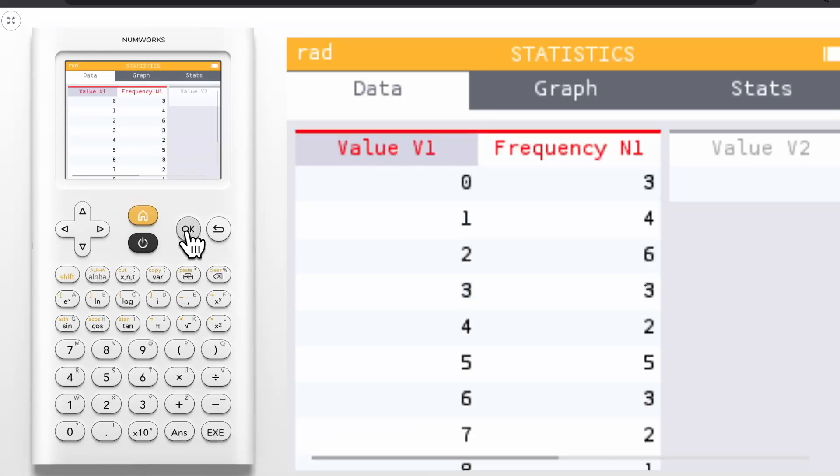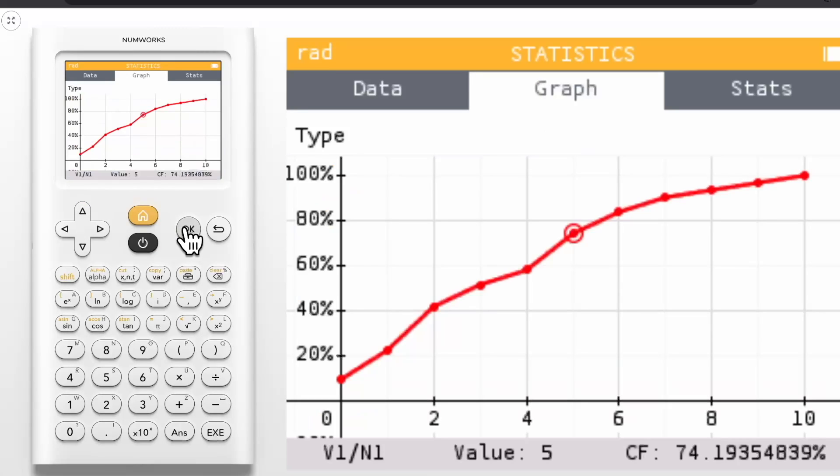We've also updated the cumulative frequencies graph. Let's head to the graph tab and select cumulative frequencies. You can move left and right on the graph to see different cumulative frequencies for given values. But now you can use your number pad to jump directly to a value of your choice. For example, I'll input 8.6 and press OK.